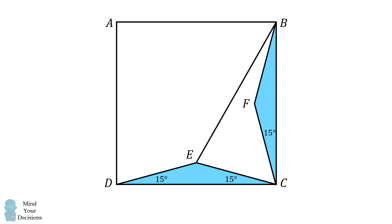Now, since FCB is equal to 15 degrees, and ECD is equal to 15 degrees, and angle C is a right angle which measures 90 degrees, we can conclude that ECF is equal to 60 degrees.